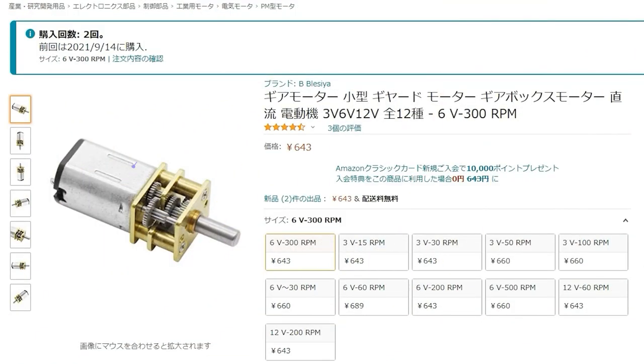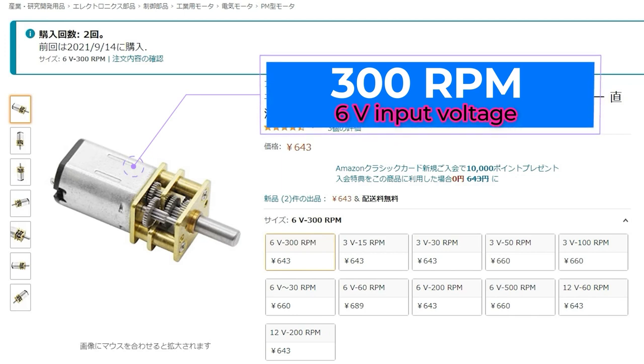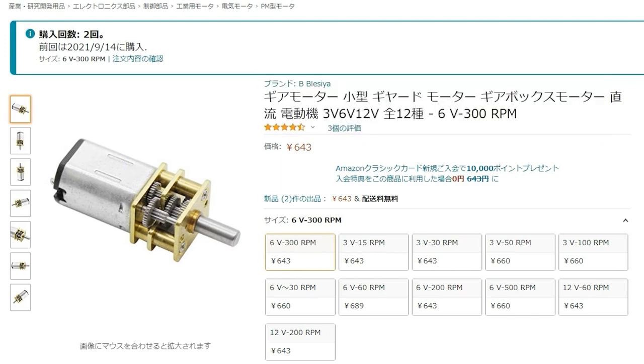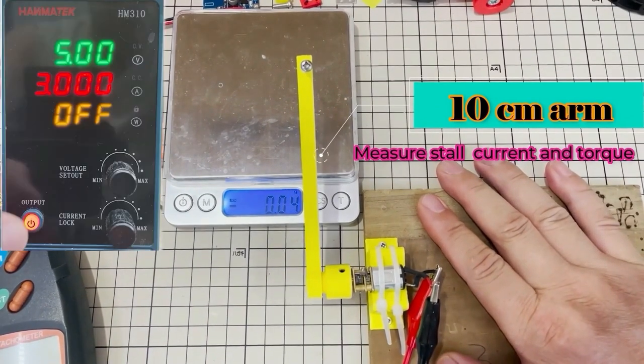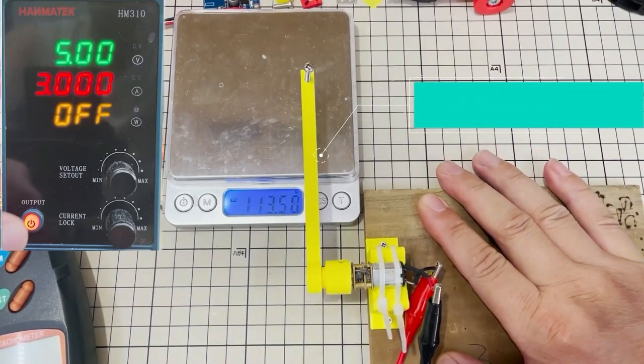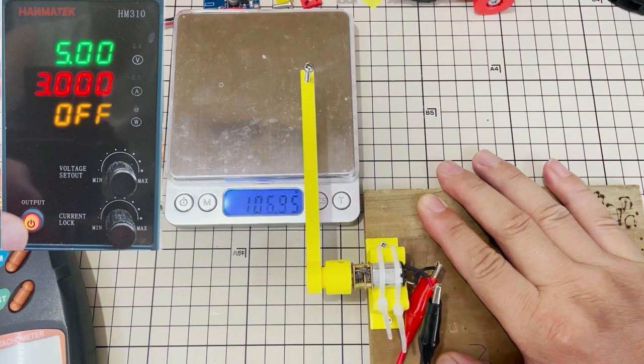The gear N20 motor I used is 300 rpm at 6 volt voltage. Since I will check the stall current and stall torque, I use 5 volts to do the experiment for safety reasons.